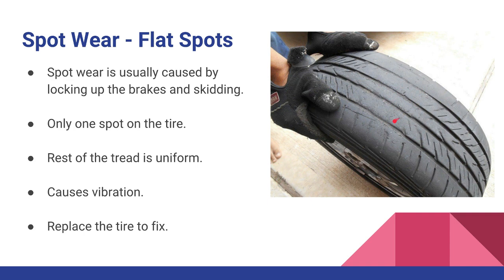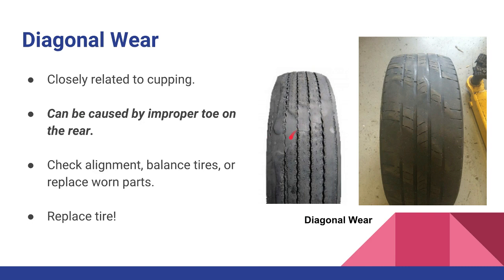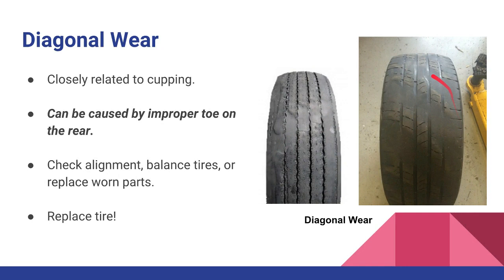Diagonal wear has many causes, but one of the big things I've seen a lot lately is improper rear toe. When rear toe is off, the tire isn't pointing straight down the road on one side — it runs in the direction it's pointing then slides back in line, creating repeating diagonal wear patterns across the tire. Anything that causes cupping can also cause this, and you can have tire belt separation problems. The key takeaway: think rear toe and always recommend an alignment check, tire balance, and replacement of any worn parts.